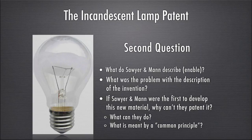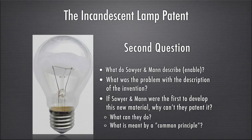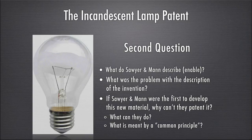If Sawyer and Mann could have told us that carbonized paper and the other materials they found had a common principle — if they had invented a common principle that made certain types of material work and others not work — then their claim would work. A person of skill in the art reading the patent would understand what types of material would work and what wouldn't. The issue with enablement is that you can only claim that to which a person of skill in the art can understand how to make and use it.